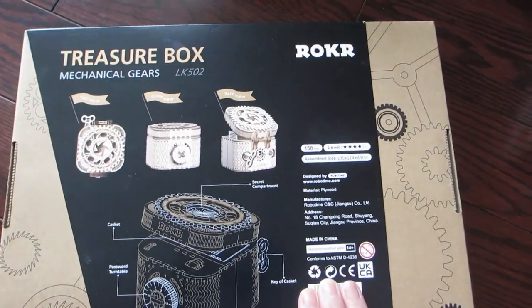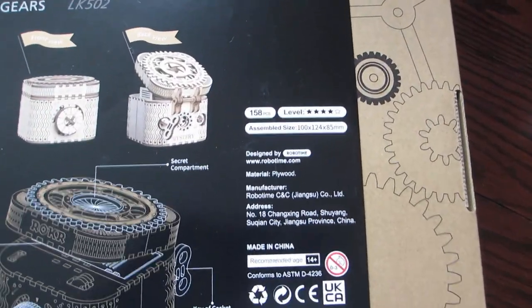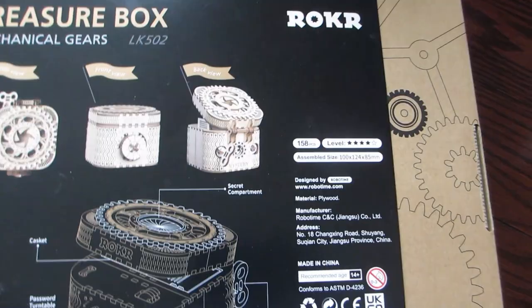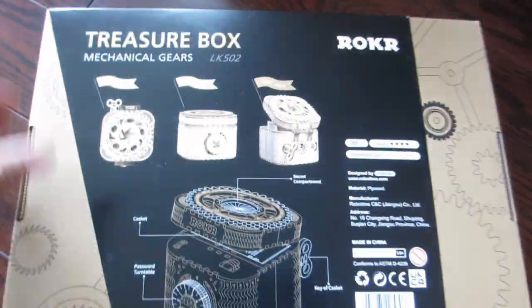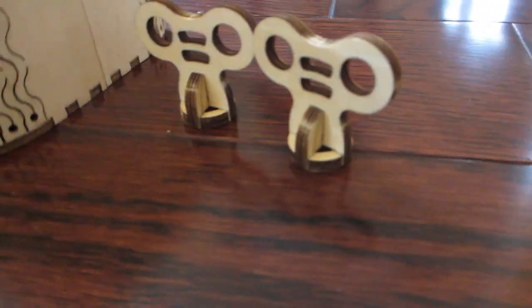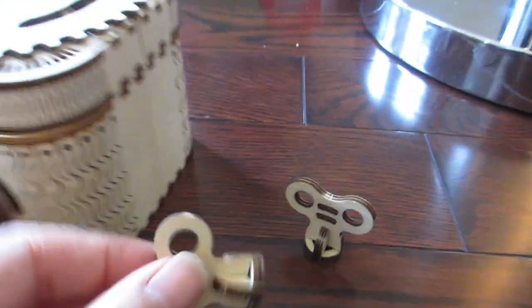This is a 3D jigsaw puzzle that uses clockwork construction to operate the locking mechanism of the treasure box. There is an instruction manual that helps you step through the process of assembling the pieces to build the box.